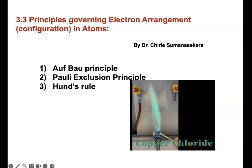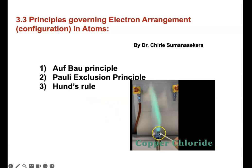In 3.3, principles governing electron arrangement or electron configuration in atoms will be discussed, and we will look at three electron filling principles. If you take a piece of copper and hold it against a Bunsen burner, you will see a green flame. This is because the electrons inside the copper atoms will absorb the heat energy.